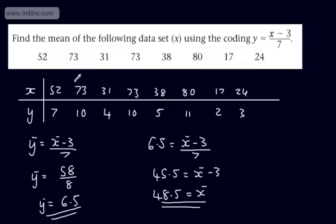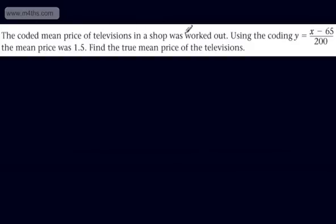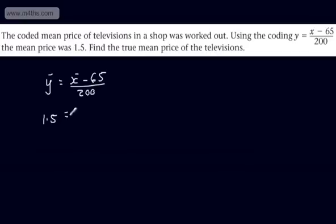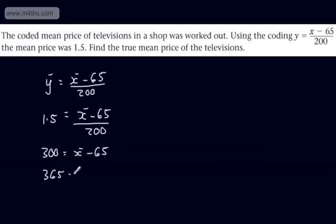Now these weren't massive numbers, but you can see how this could be quite effective if they were. So we've applied the linear transformation, found the mean of the coded data, and then worked it backwards to find the mean of the original data set. Next question: the coded mean price of televisions in a shop was worked out using the coding Y = (X − 65) / 200, and the mean price was 1.5. We're asked to find the true mean price. So 1.5 = (X̄ − 65) / 200. Multiplying both sides by 200 gives 300 = X̄ − 65. Adding 65, X̄ = 365. The mean price of the televisions was £365.